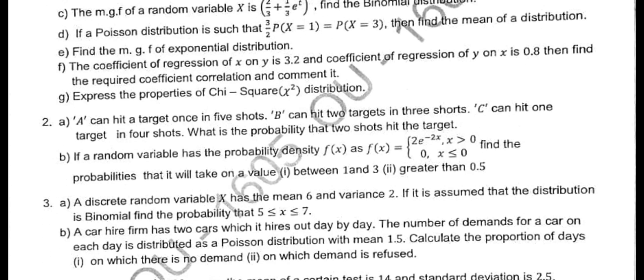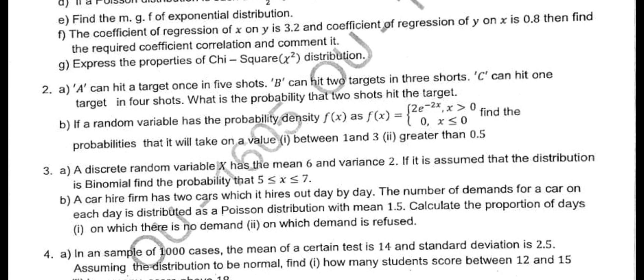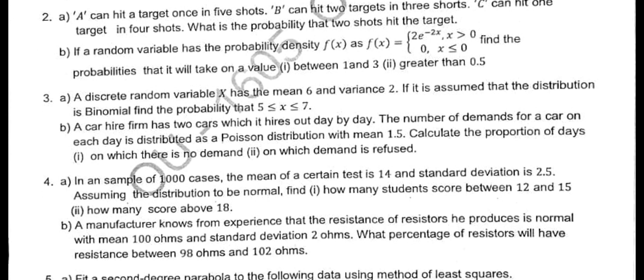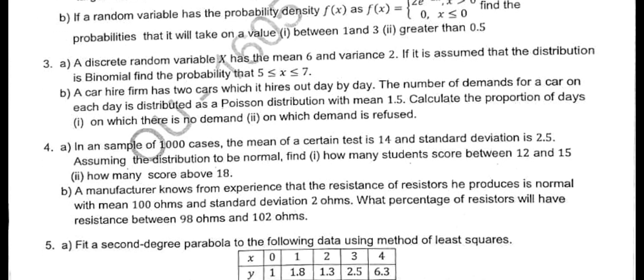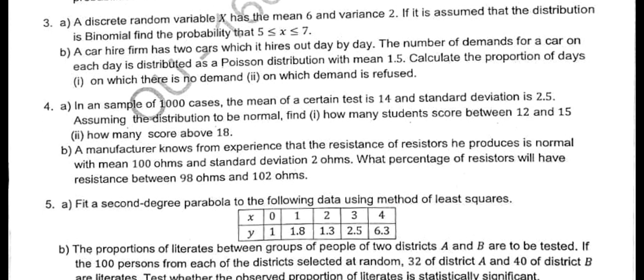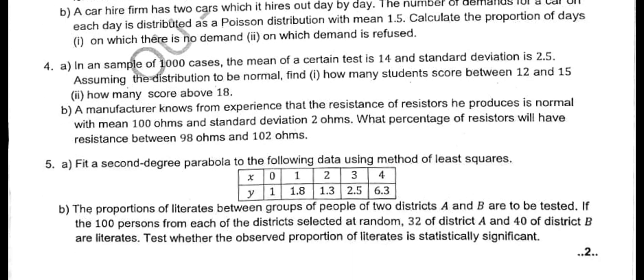It depends on how he framed the question paper, but one short answer is guaranteed from each unit. Now coming to long answers: the first question is from probability, the second is from probability density function, the third long answer is from binomial distribution, and B bit is Poisson distribution. See how he covered all the topics.